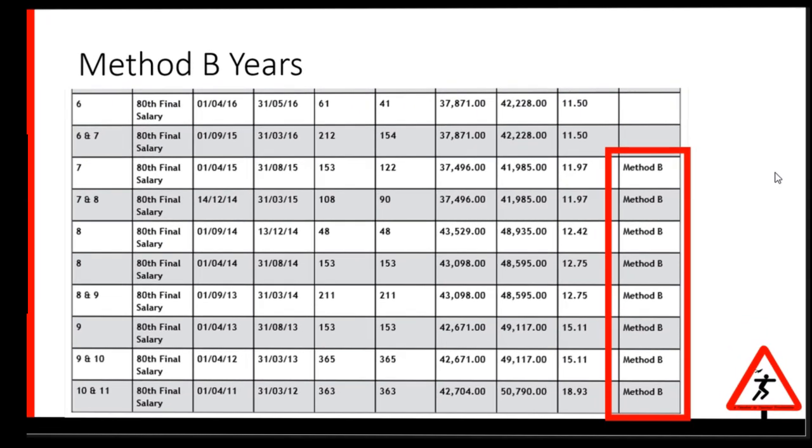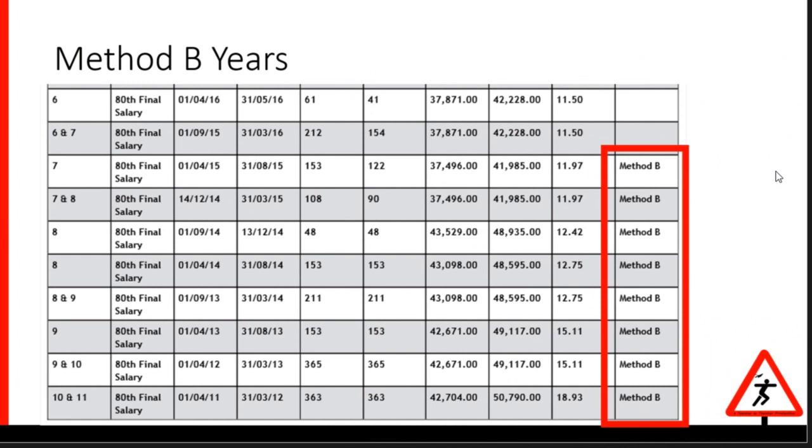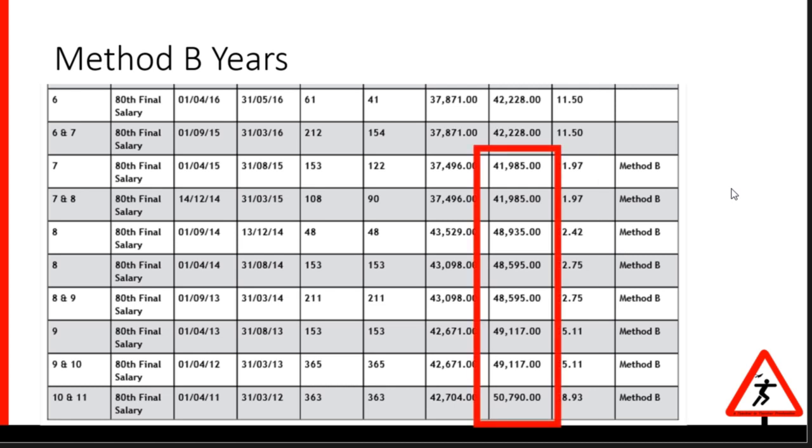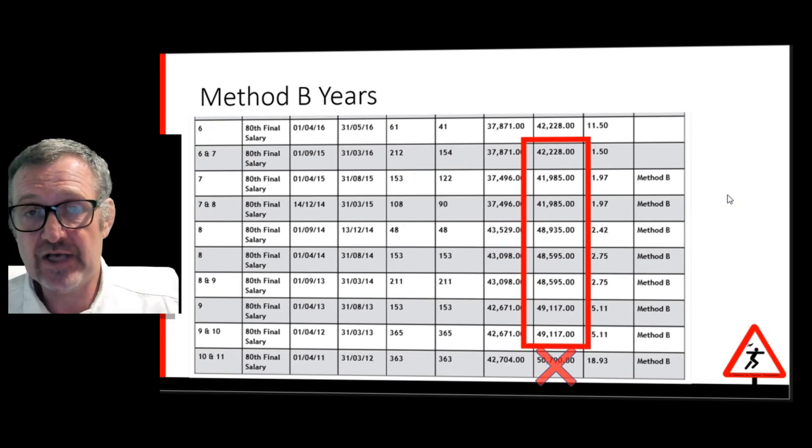The part I want you to focus on is the last column where it tells you which salaries are being used in your Method B calculation. The salaries shown here are the ones that have had inflation added to them. And here is the problem. That bottom salary is going to start disappearing from the calculation, as it's going to move outside the 10-year window that Method B uses. The 10-year window moves on and uses more recent salaries. And if those salaries are lower, then your final salary pension is going to go down.